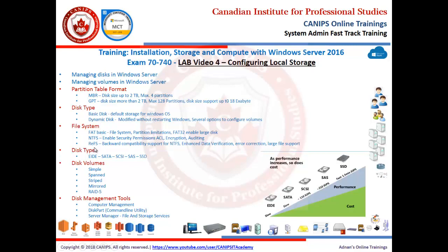NTFS enables security permissions, ACLs, encryption, and auditing. ReFS — the Resilient File System — is the latest one, offering backward compatibility with NTFS plus enhanced data verification and error correction. FAT is no longer commonly used. Most computers use NTFS, and in corporate and enterprise networks NTFS is standard. ReFS is a newer file system introduced in Server 2012 and is also available in Server 2016.